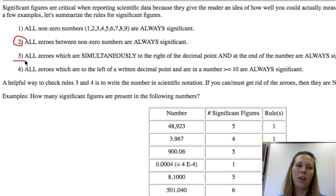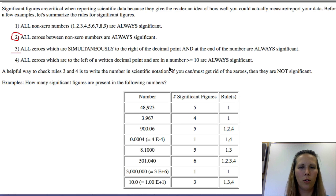Number three, all zeros which are simultaneously to the right of the decimal point and at the end of the number are always significant. So to the right of a decimal point and at the end of a number. So there is to the right of a decimal point right there, and then at the end of a number right there. Both of those zeros are significant because we're using them as placeholders that we were able to measure out to the hundredths place. And that's the hundredths and that's the tenths place. I'm having a hard time because I'm using my mouse to draw.